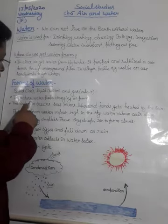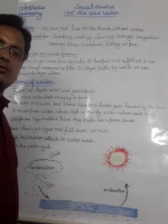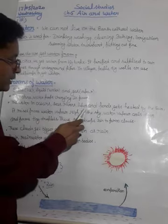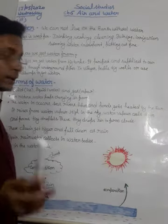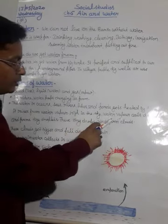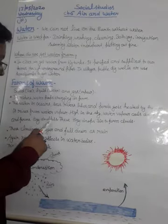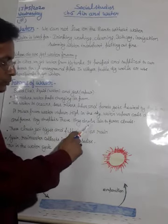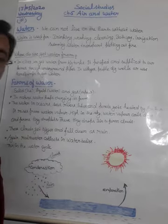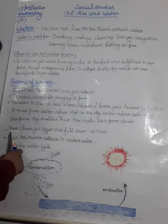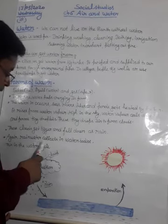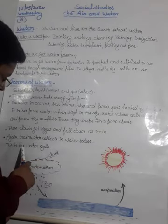In nature, water keeps changing its form. The water in oceans, seas, rivers, lakes, and ponds gets heated by the sun. It rises as water vapor. High in the sky, water vapor cools down and forms tiny droplets. These tiny droplets join together to form clouds. This is called the water cycle. These clouds get bigger and fall down as rain, and the rainwater collects in water bodies.